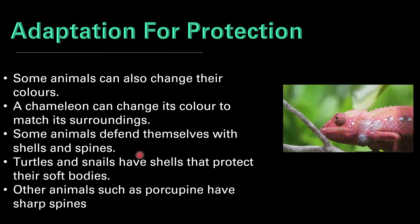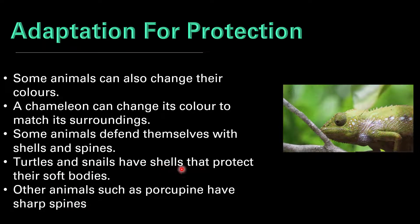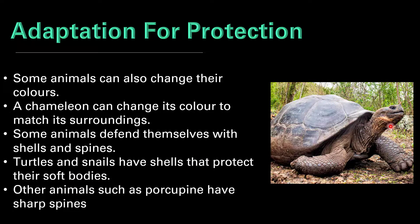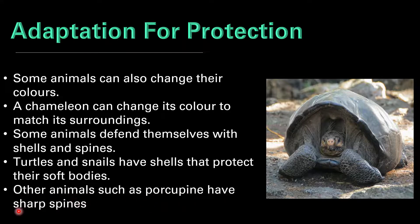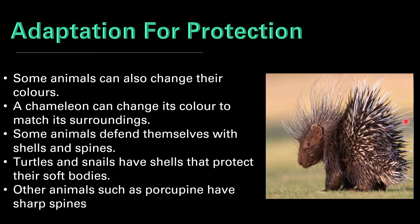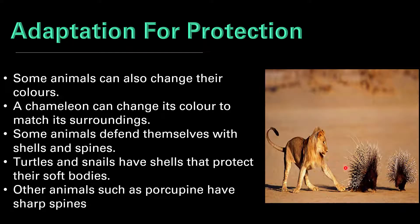Some animals defend themselves with shells and spines. For example, turtles and snails have shells that protect their soft bodies. As we can see in these images of a tortoise, the head and legs can be taken inside the shell — the tortoise does this when it senses danger around it. Other animals such as porcupines have sharp spines, as we can see in this image of a porcupine, and with these spines it protects itself from other animals.